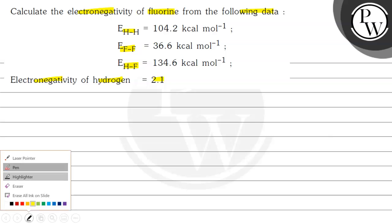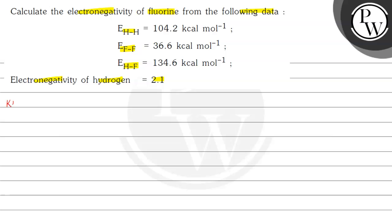Here we will start our solution. We will start with the key concept. According to Pauling's equation, electronegativity of fluorine minus electronegativity of hydrogen will